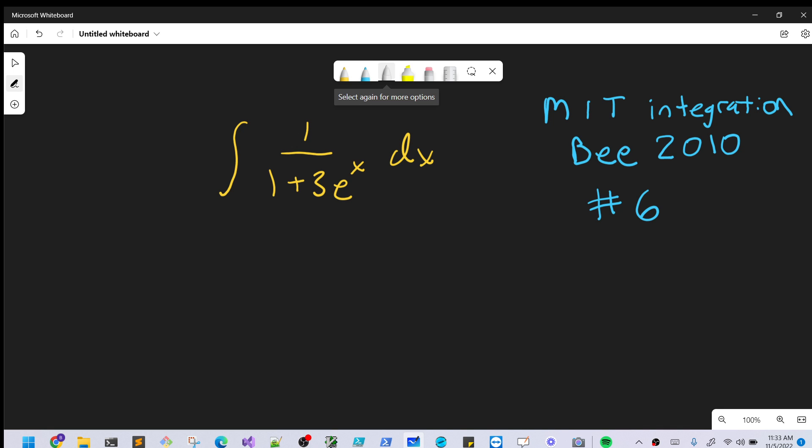I'm continuing with my series of videos on the MIT Integration Bee. We have a problem from the 2010 B, problem number 6: the integral of 1/(1+3e^x) dx.